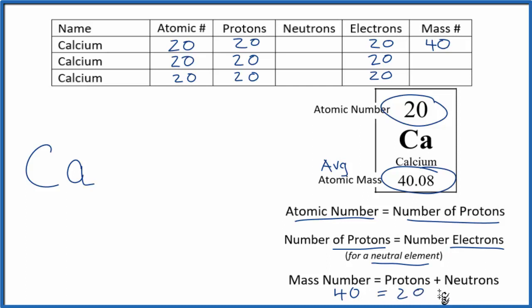Now we can see that 40, if that's the mass number, equals protons plus neutrons. 20 plus 20, that gives us 40. So this isotope has 20 neutrons.